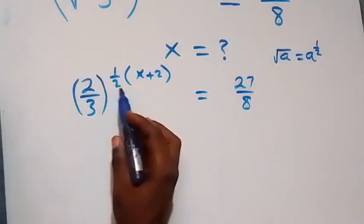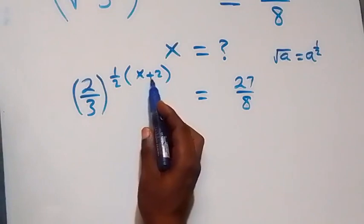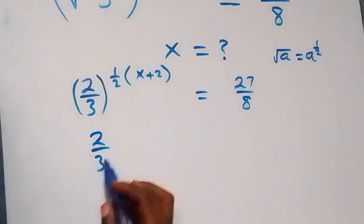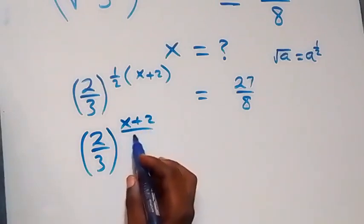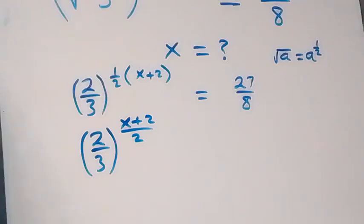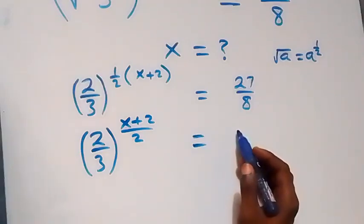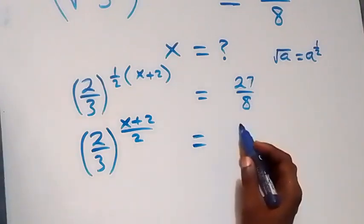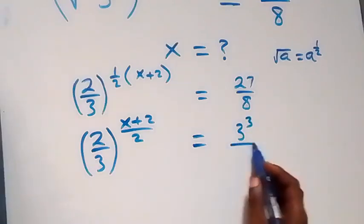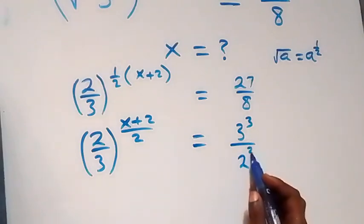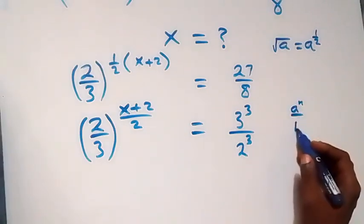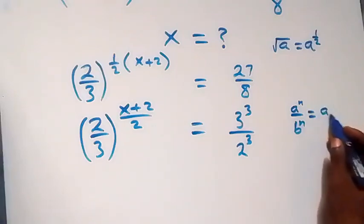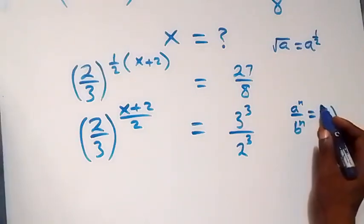We can write this as x over x plus 2, then over 2, so we have 2 over 3 now raised to power x plus 2 over 2. From here, applying the law of indices: when we have a raised to power half over b raised to power half, this is the same thing as a over b raised to power half.